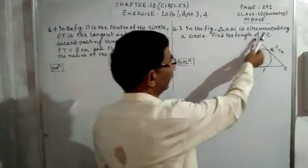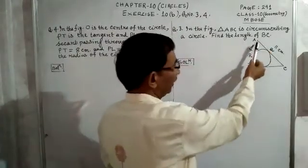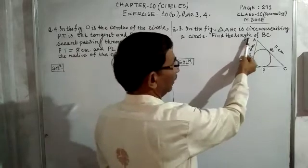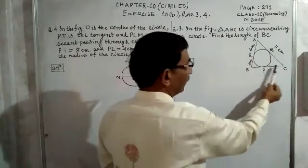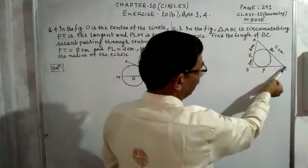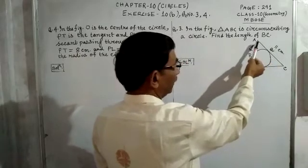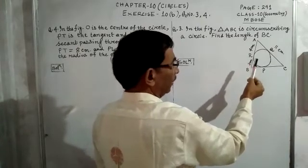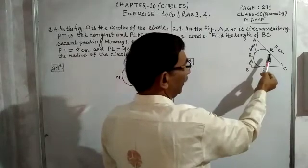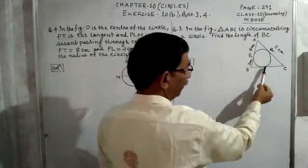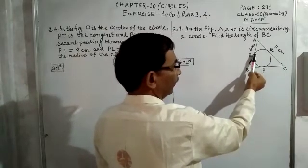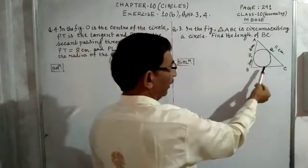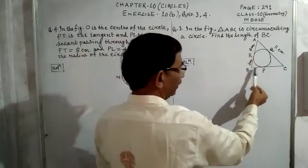In the figure, triangle ABC is circumscribing a circle. We have to find the length of BC. The length of AC is given 11 cm, AR is given 4 cm, and RB is given 3 cm. The circle touches the three sides of the triangle at the points P, Q, and R.